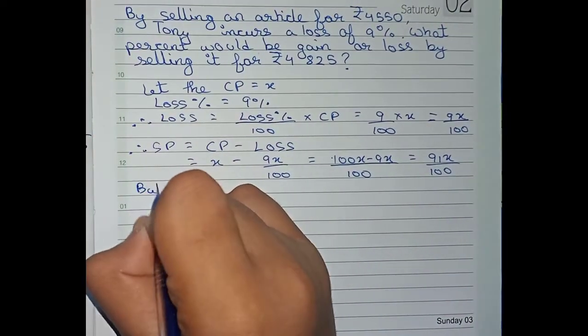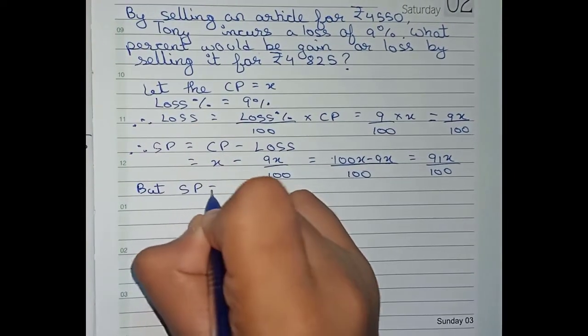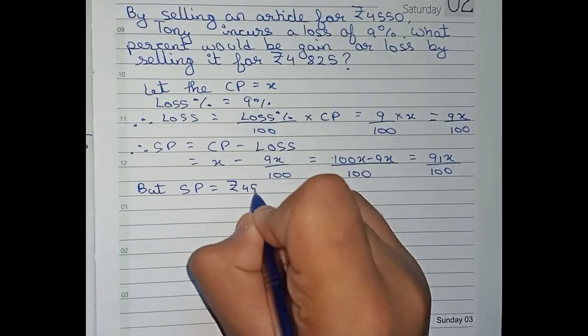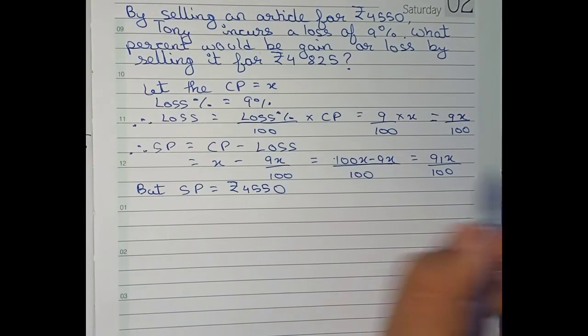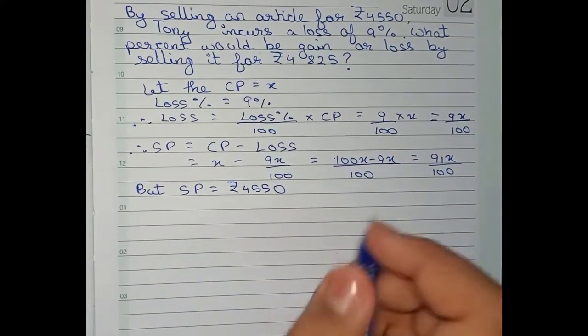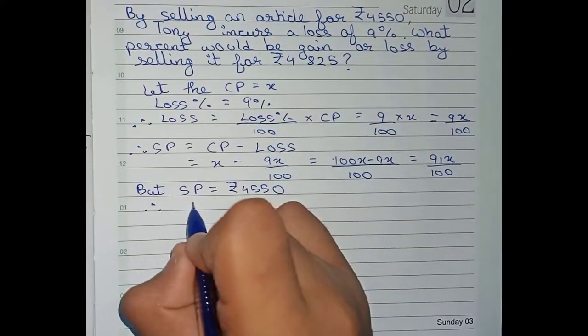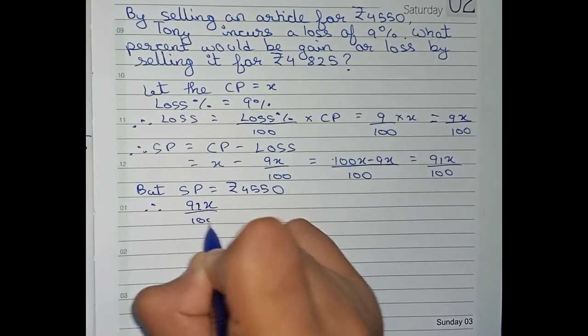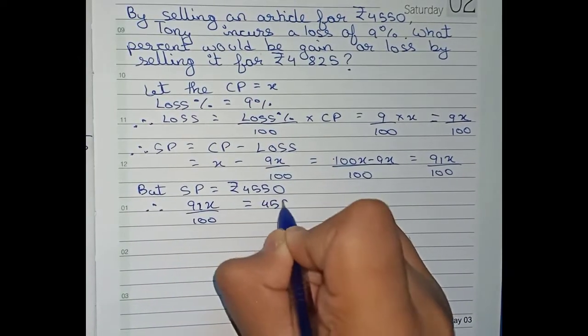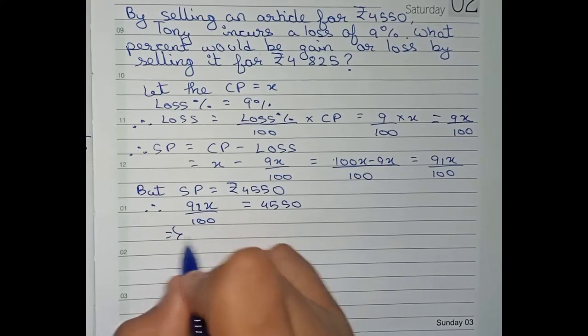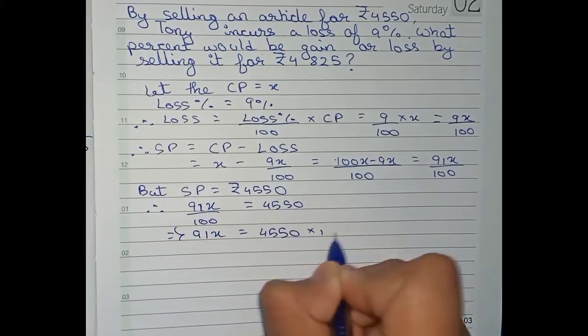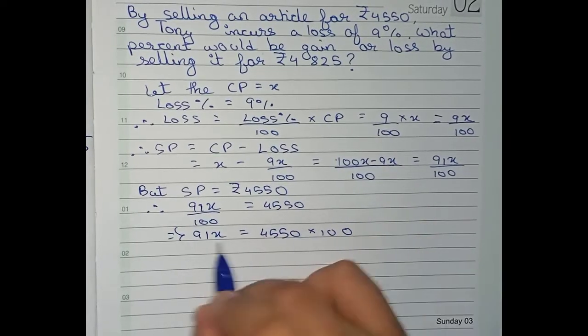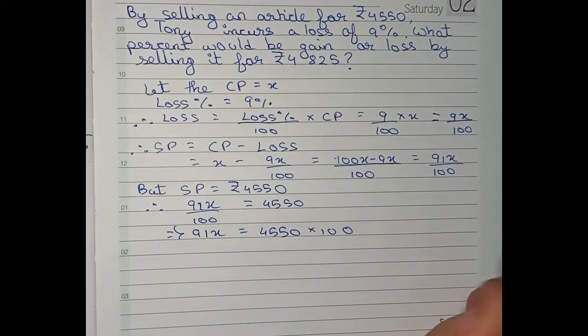But SP equals to Rs. 4550 as it is given in the question. So that means 91x by 100 is equal to 4550. Or 91x equals to 4550 into 100. We are taking 100 from left side to right side, so it goes for multiplication.